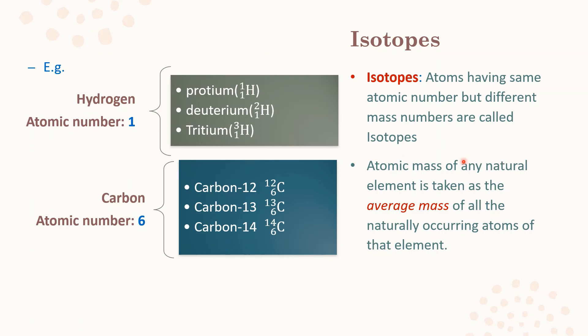Isotopes have the same chemical properties but different physical properties. Some isotopes have special applications: an isotope of uranium is used as fuel in nuclear reactors, an isotope of cobalt is used in the treatment of cancer, and an isotope of iodine is used in the treatment of goiter.